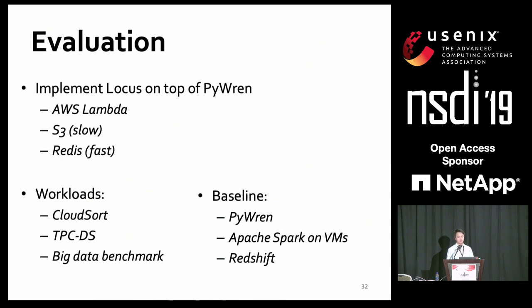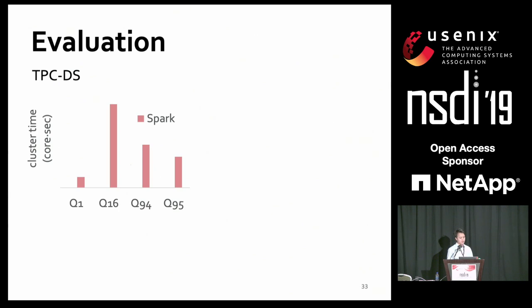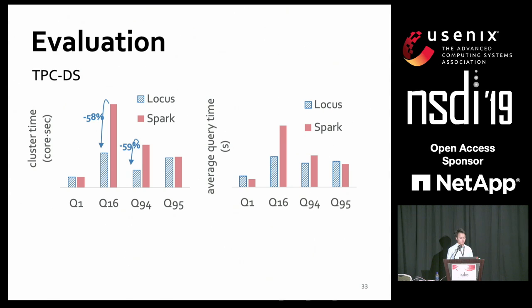For TPC-DS, Locus significantly reduces total resource usage because on a serverless infrastructure we can release compute resources when no longer needed. TPC-DS queries have varying levels of parallelism across stages. For queries like Q16 and Q94, we reduce required resources by up to 59%. At the same time, we don't sacrifice performance — despite Lambda workers being five times more expensive and using less efficient hardware, Locus actually beats Spark for most queries.